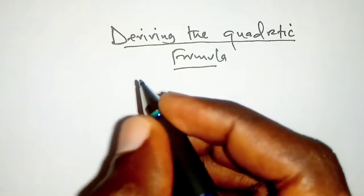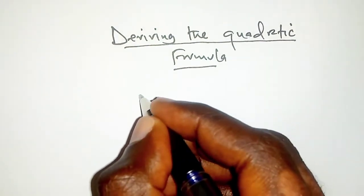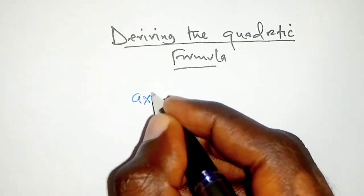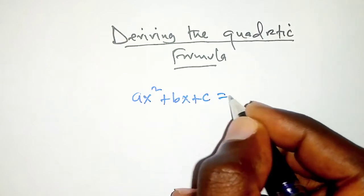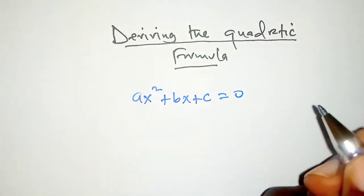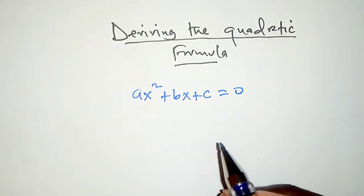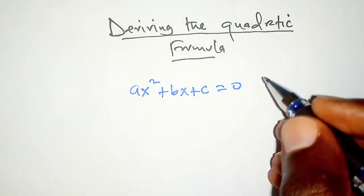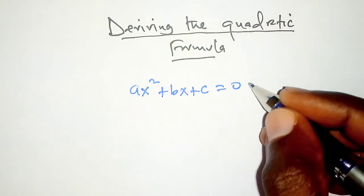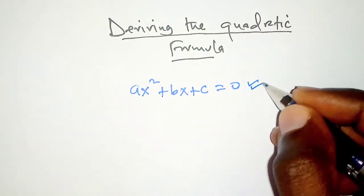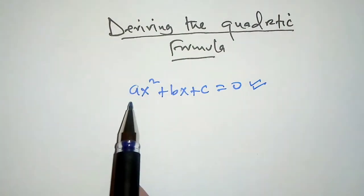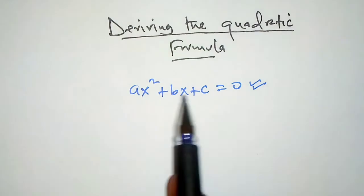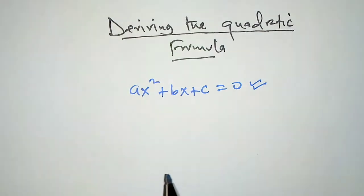Consider a quadratic equation in the form ax squared plus bx plus c equals zero. We are going to make x the subject in this formula, and we are going to achieve that by solving this equation by completing the square method.